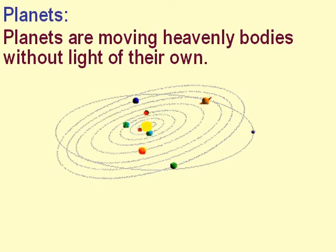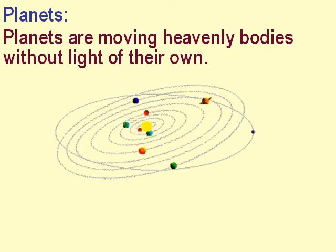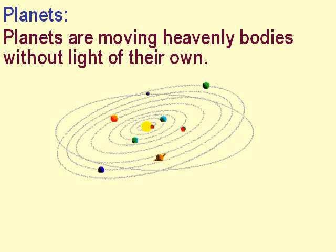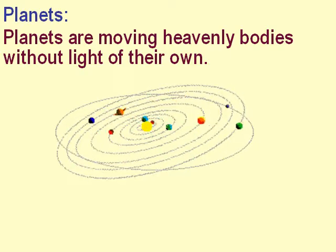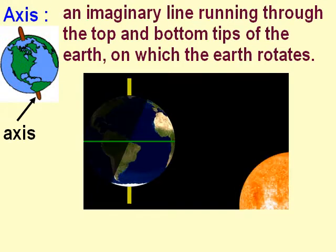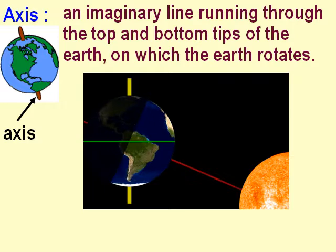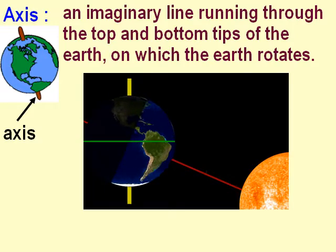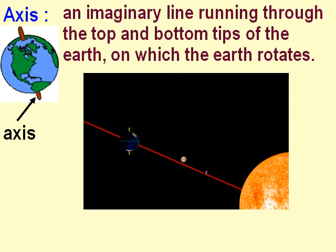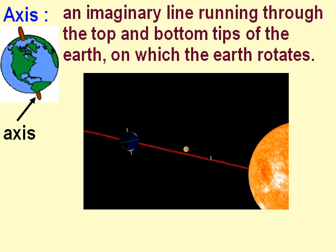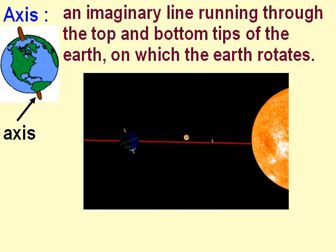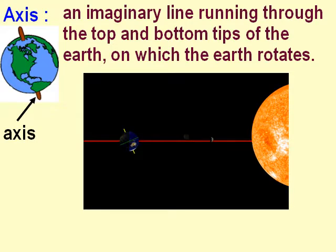Planets are moving heavenly bodies without light of their own. Axis is an imaginary line running through the top and bottom tips of the earth, on which the earth rotates.